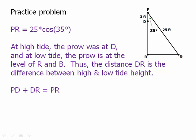Well, we know that PD plus DR equals the length PR—the two little segments together add to the big segment. So that means that 3 plus DR equals 25 times cosine of 35 degrees. That's the expression we got for PR.